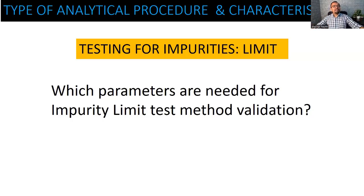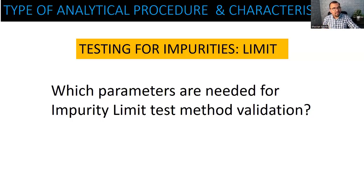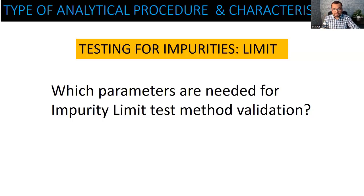Let us now go to the second important parameter, which is accuracy. How can accuracy be done? Accuracy is done with the percent recovery experiment — meaning you spike the actual impurity into a standard and then determine how much impurity is found on the TLC plate. So you have a 10 ppm limit, and you have spiked 10 ppm impurity onto the TLC plate along with the placebo, and now you run the TLC plate.